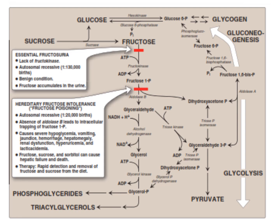The metabolism of fructose begins with fructokinase, a specific enzyme that phosphorylates fructose to fructose 1-phosphate using ATP. Deficiency of fructokinase is called essential fructosuria, an autosomal recessive benign condition in which fructose accumulates in the urine.